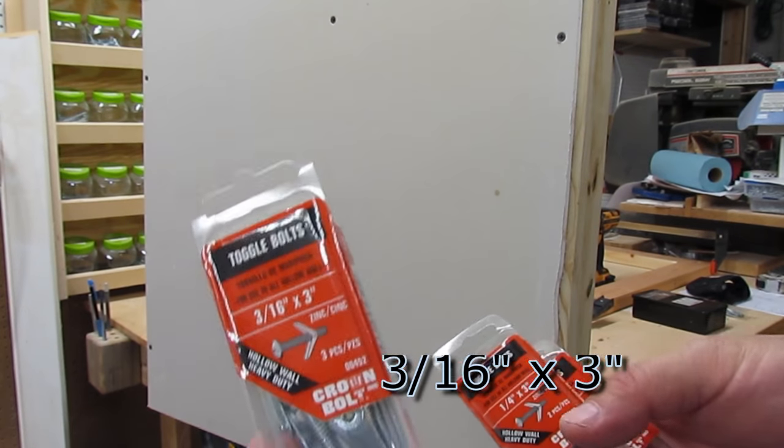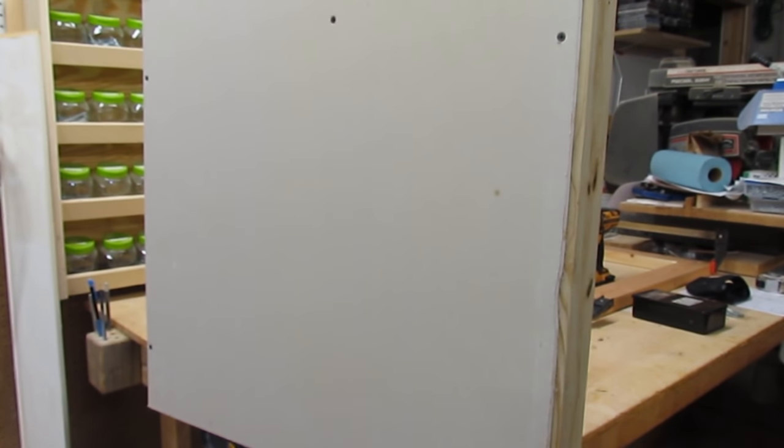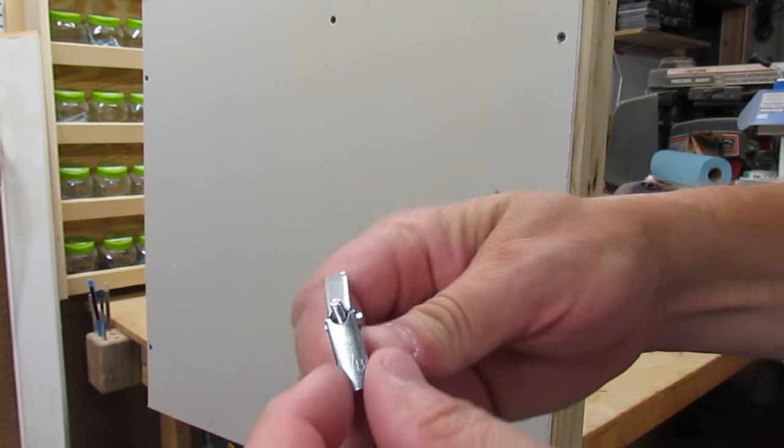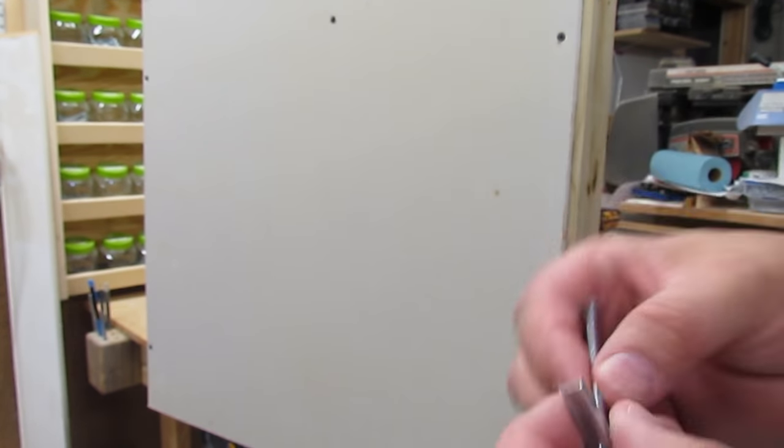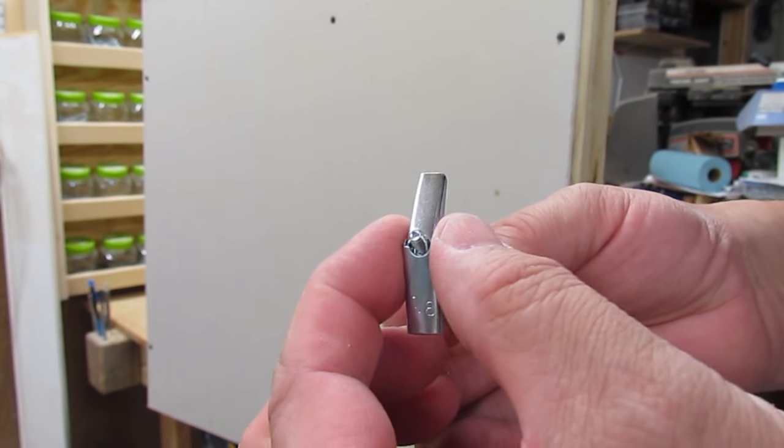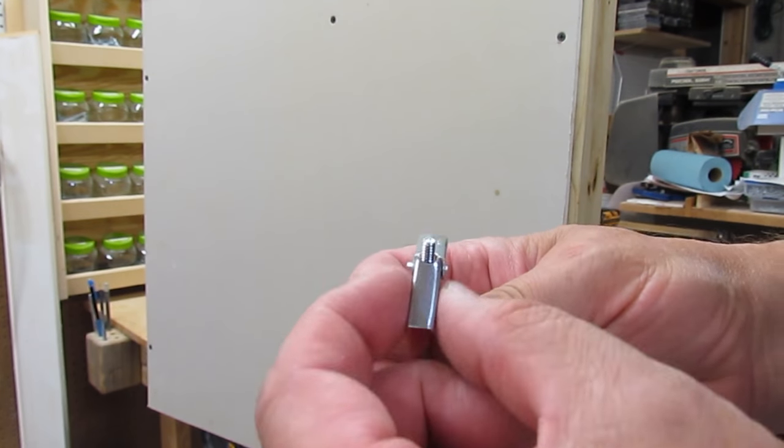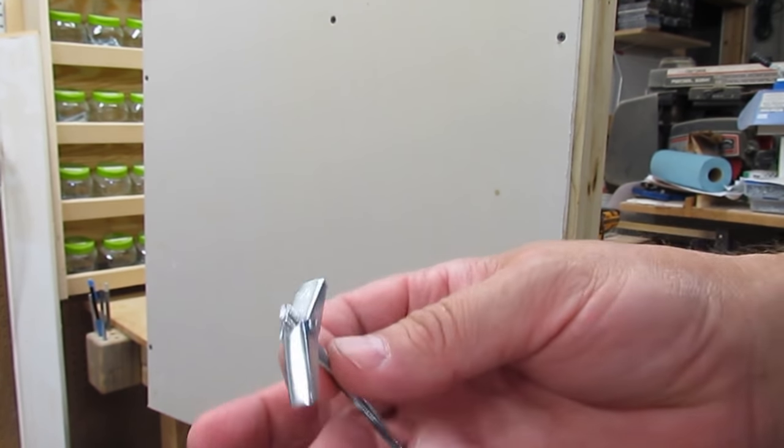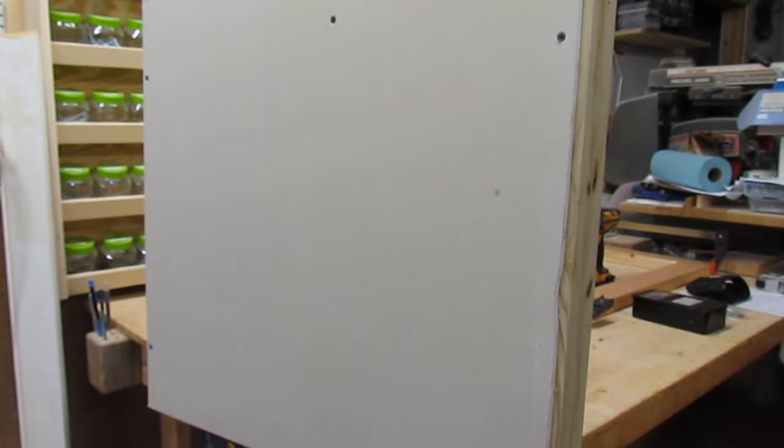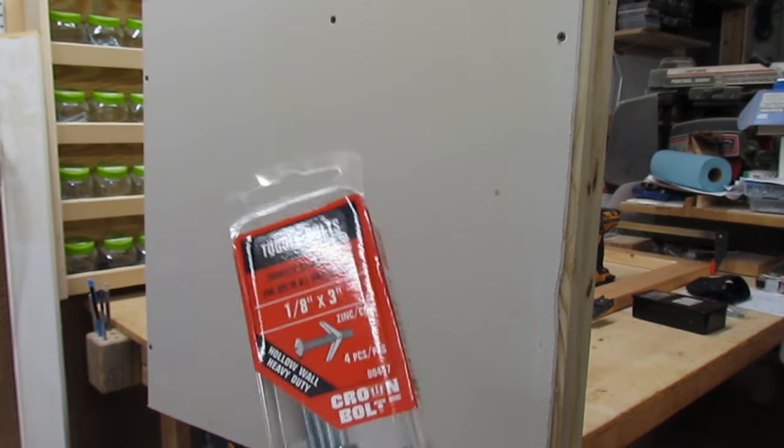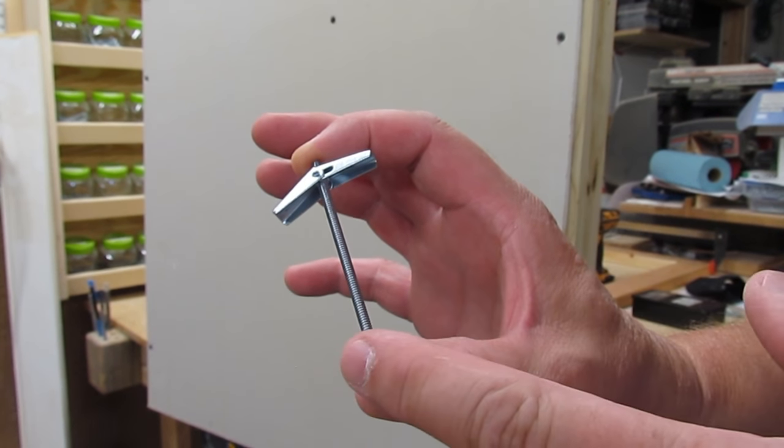Toggle bolts come in different sizes: 3/16 by 3, 1/8 by 3. The first number is the size of the toggle bolt, and most toggle bolts will have it printed right here. It's kind of the basic width of the toggle, but not really. I'm not real sure how they size these things because nothing you measure on here is an eighth of an inch, but anyway that's what size they go by. The second number though, for example this one is 1/8 inch by 2, this one is 1/8 inch by 3. The second number is the length of the screw, whether it's two inches or three inches or whatever.